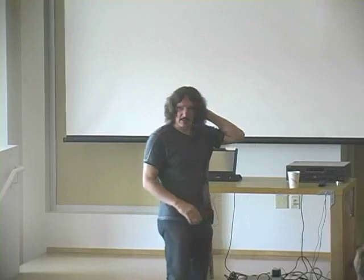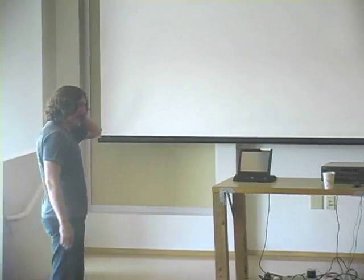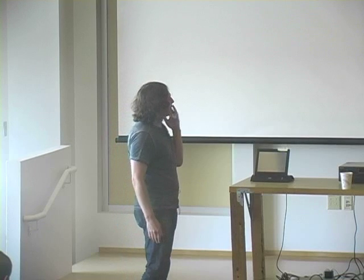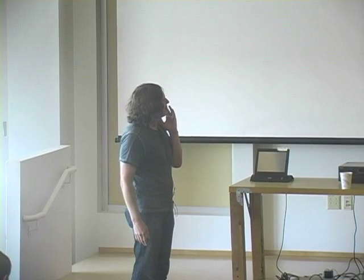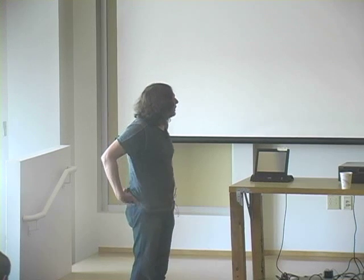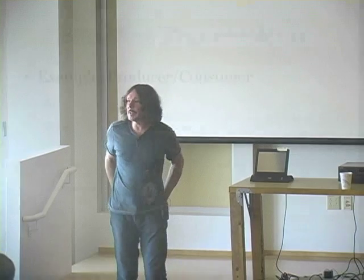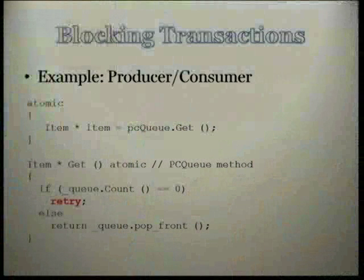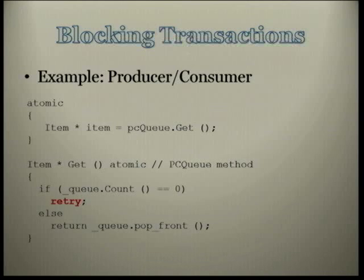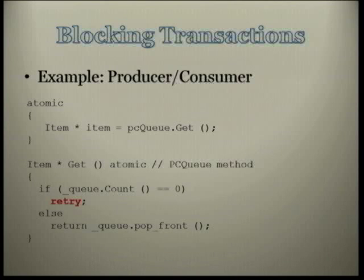The third major benefit of transactional memory is blocking transactions, which solves composability in a more complex way. The typical example is the producer-consumer queue — everybody knows how hard this is to actually program correctly. In theory it looks simple, but in practice it's deadlock after deadlock. You have producers putting items on the queue and consumers getting items from the queue. To get an item, you start a transaction, put it in an atomic block, and call get.